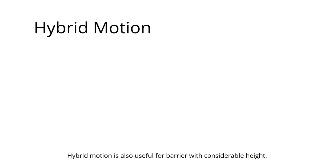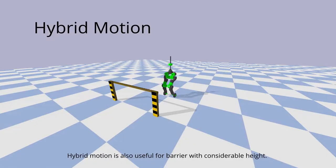Hybrid locomotion is also useful for barriers with considerable height. The robot can avoid the barrier without steering control.